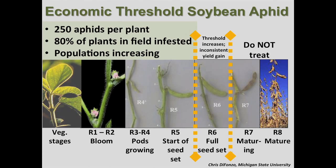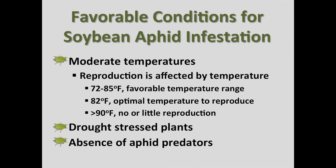Once the soybean reaches full seed set R6, research has not shown a reliable yield gain from insecticide treatment. Conditions that favor aphid population growth are cool temperatures in the high 70s to low 80s, plant stress like drought stress, and the lack of aphid predators.